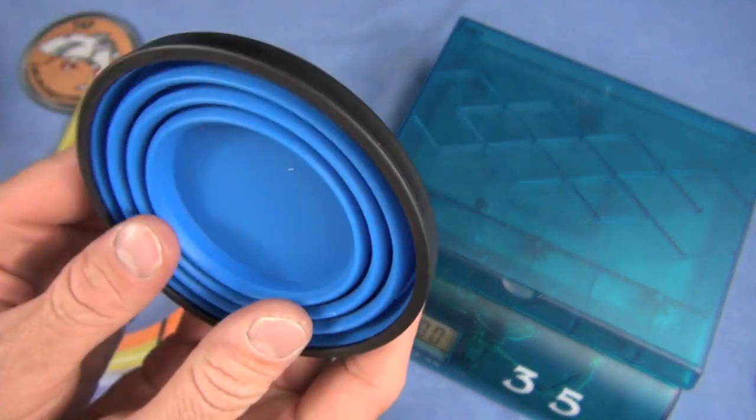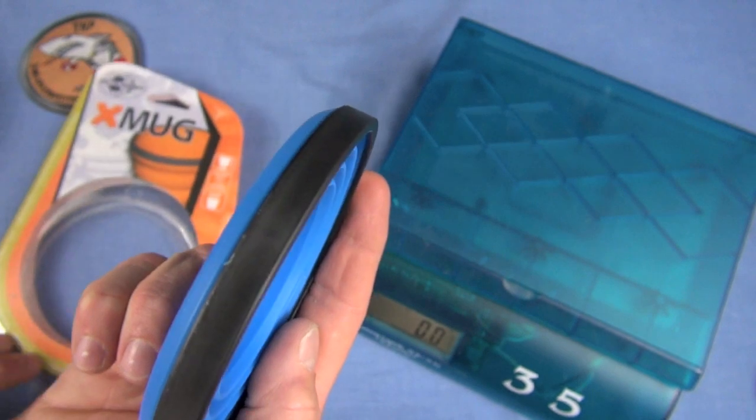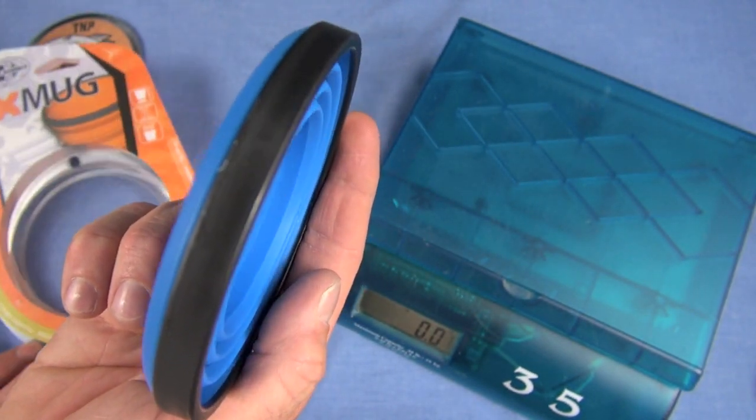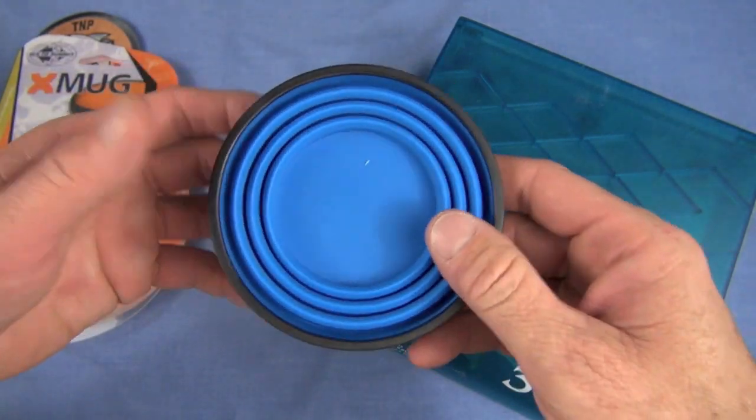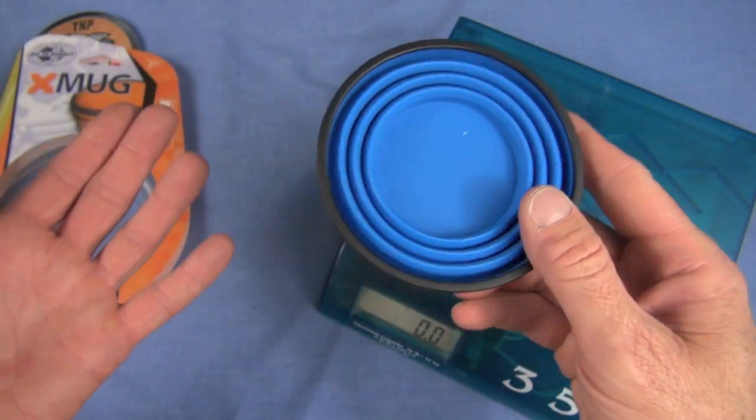The C2 Summit X mug, which by the way is a 16-ounce container. Look at the weight. When you first lift it up, you're like, it's not super lightweight and it isn't, but it's lighter than that. 2.2 ounces.